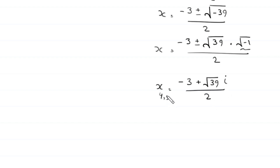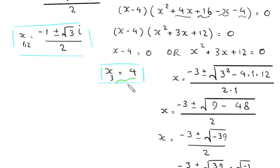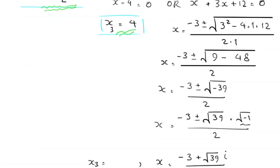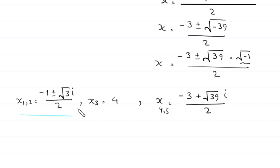So these are the five solutions of this equation. x₃ equals 4. x₁ and x₂ equal negative 1 plus or minus root 3 times i, divided by 2. And x₄ and x₅ equal negative 3 plus or minus root 39 times i, divided by 2.